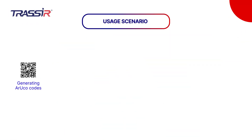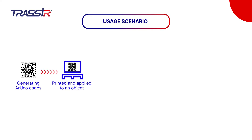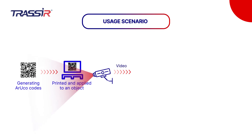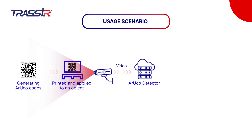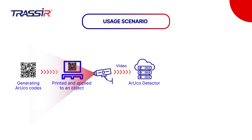To use the Traseo Aruko detector module effectively, it is necessary to print the code and physically stick it onto the object of interest. The high-efficiency detector will locate objects of interest on the territory, provided that the codes are fully visible to the camera. The Traseo Aruko detector finds all codes detected by Aruko in the frame on static and moving objects.